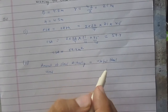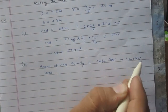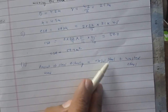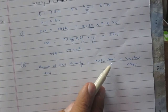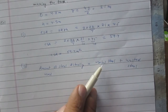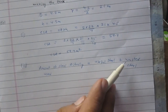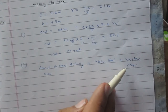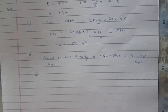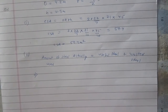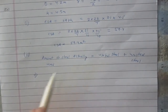Steel actually used equals useful steel plus wasted steel. The useful steel is the steel used in making the tank, so to find the useful steel we need to calculate the total surface area of the cylinder. The wasted steel is one-twelfth of the amount of steel actually used. Let us now calculate the total surface area of the tank to find the amount of useful steel.